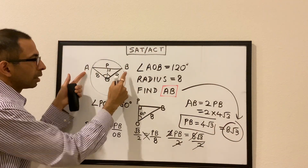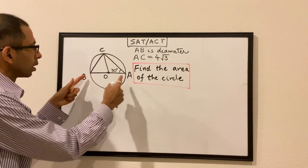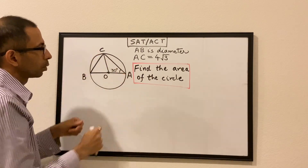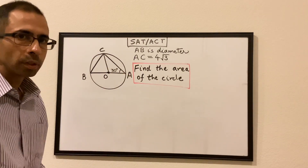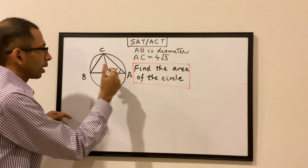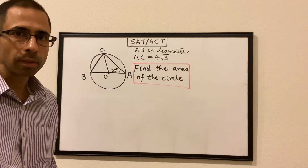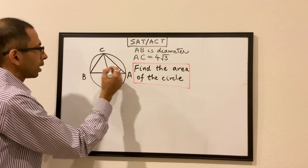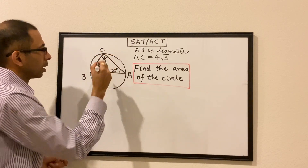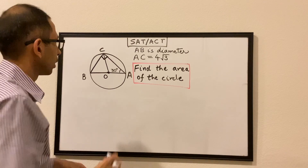The length of AB is 8 root 3. Let's look at another question. We have a circle with center O; AB is the diameter, and AC is 4 root 3. We have to find the area of the circle. Since AB is the diameter, this is a semicircle, and any triangle within a semicircle is a right angle triangle — so triangle ABC has a 90 degree angle.